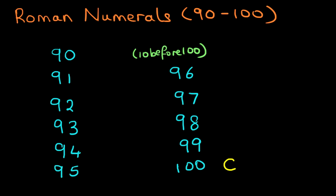So how do we write the number 90 in Roman numerals? We write down X, that is the 10, before 100. So 90 is written as XC, that is 90.